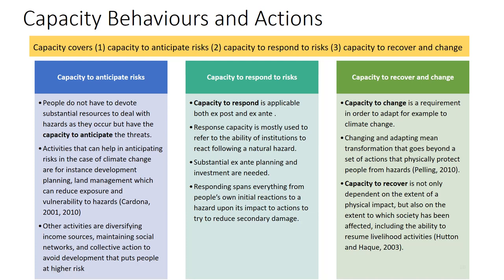Capacity covers three dimensions: capacity to anticipate risk, capacity to respond to risk, and capacity to recover and change. People don't have to devote substantial resources to deal with hazards as they occur if they have the capacity to anticipate the threats — for example, through land management, planning, having disaster risk structures, and institutions that plan for events like floods or droughts. Anticipating this will reduce exposure and vulnerability to threats.